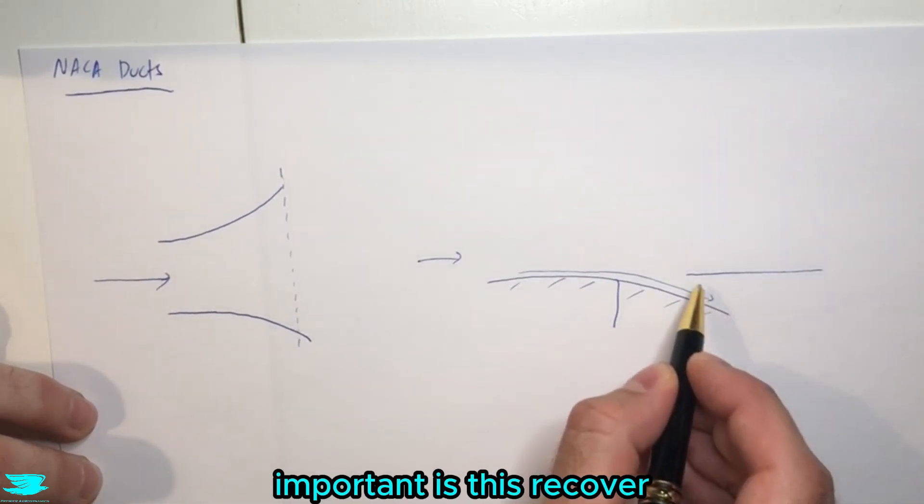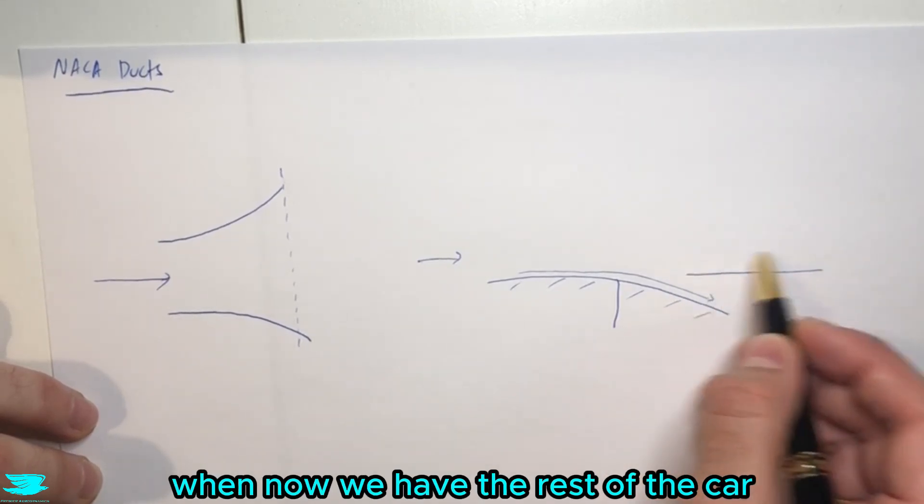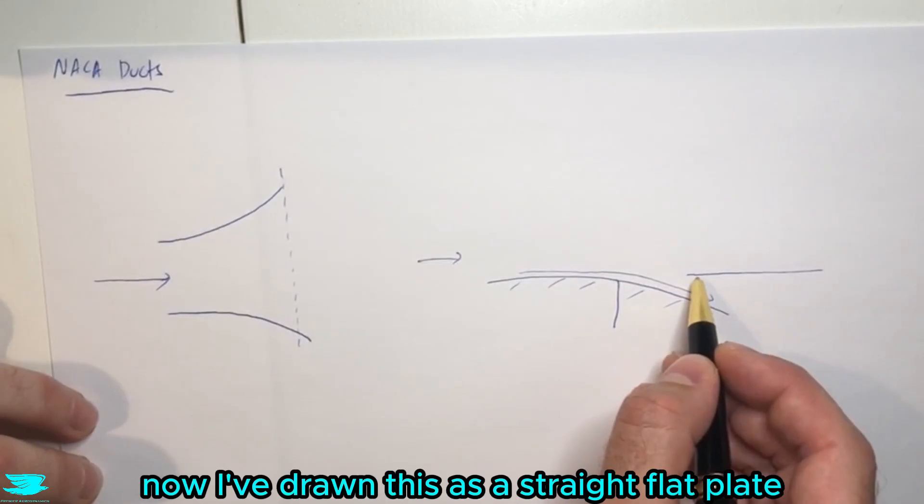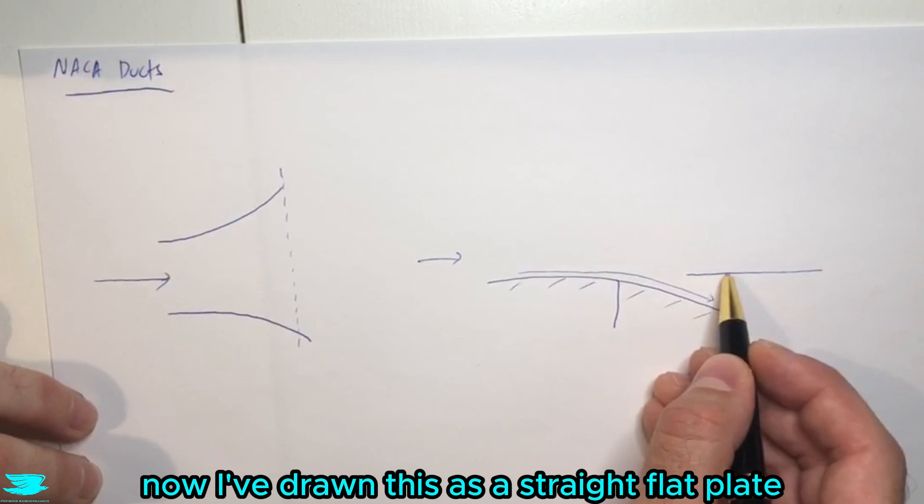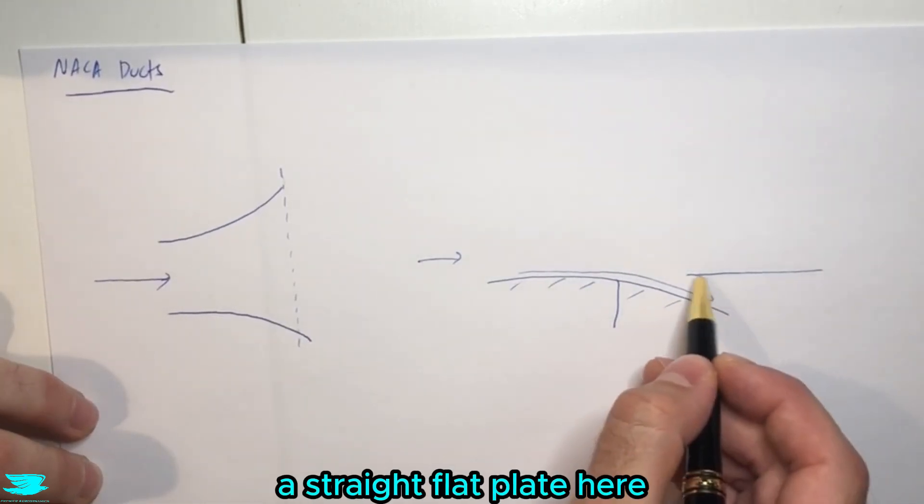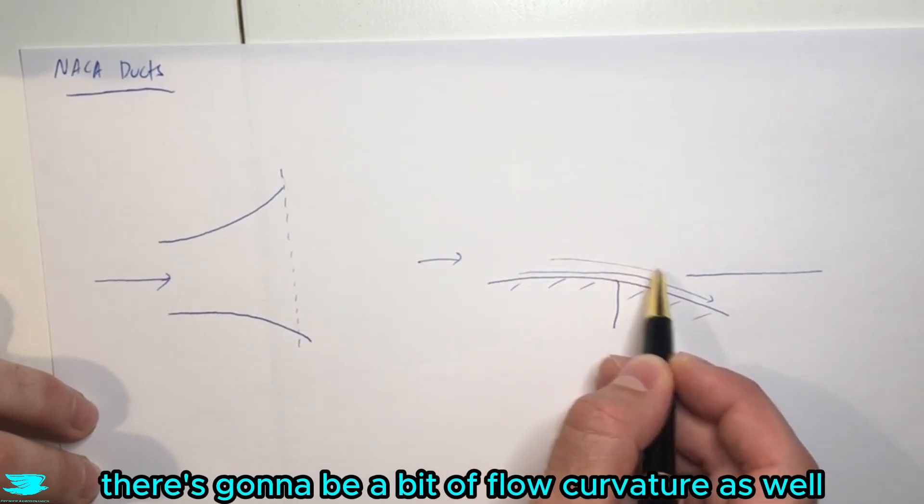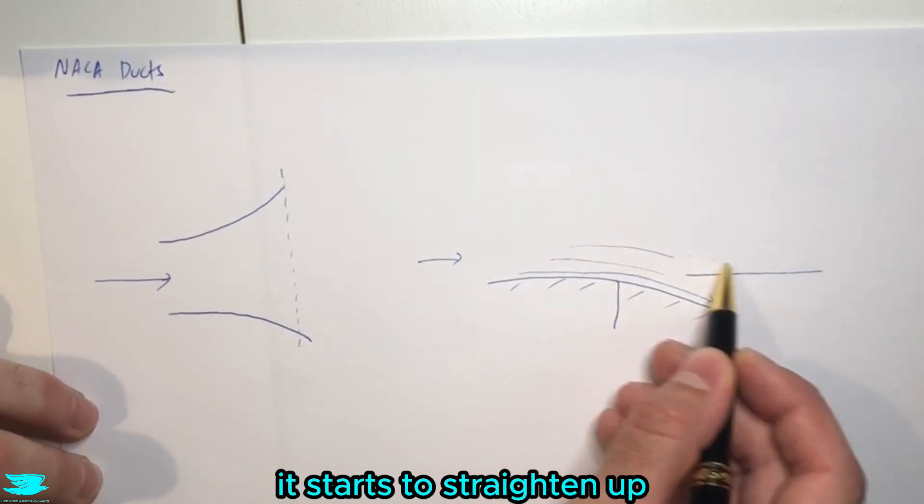Now, another thing that's important is this recovery surface here, where now we have the rest of the car behind here. Now, I've drawn this as a straight flat plate, but many of you who know aerodynamics will know that if I have a straight flat plate here, and we have flow coming down here, there's going to be a bit of flow curvature as well over here before it starts to straighten up.